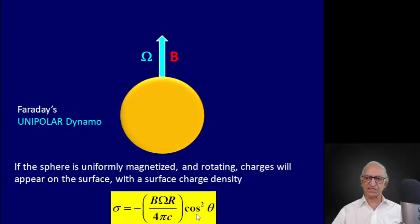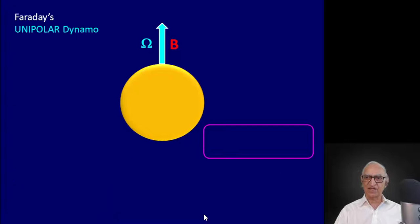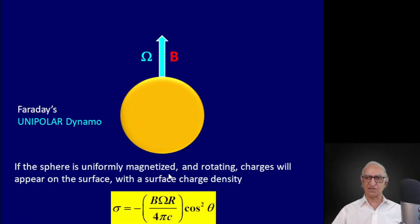If the sphere is uniformly magnetized and rotating, charges will appear on the surface with surface charge density σ = B ω R / (4πc) × cos²θ. So the symmetry of the surface charge density is quadrupolar, proportional to cos²θ. Why does this charge appear? The moment I magnetize this sphere and spin it, charges appear on the surface because that is essential for the dynamo to function. If there are charges, connect a torch bulb with two wires to any two points on the surface and the bulb will light up — essentially that is what happens in your cycle dynamo.